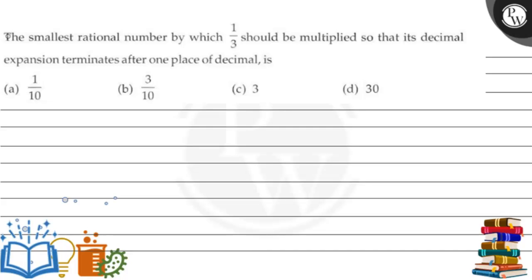Hello, let's read the question. The question says: the smallest rational number by which 1/3 should be multiplied so that its decimal expansion terminates after one place of decimal is (a) 1/10, (b) 3/10, (c) 3, or (d) 30.